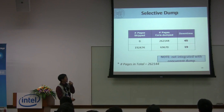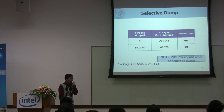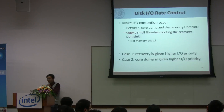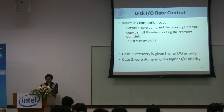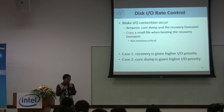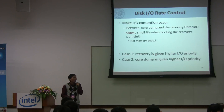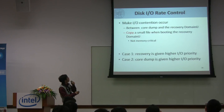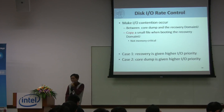It should be noted that we currently didn't mirror the effects of combining concurrent crash dump and selective dump. For the disk algorithm control, we are trying to mirror the virtual machine which is I/O-intensive. This virtual machine is often called small file between the recovery domain, so that this virtual machine is our I/O-intensive target.